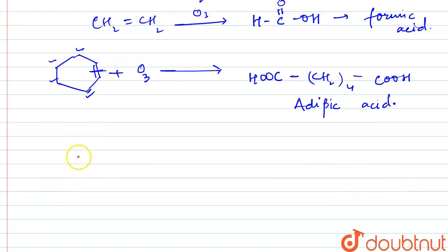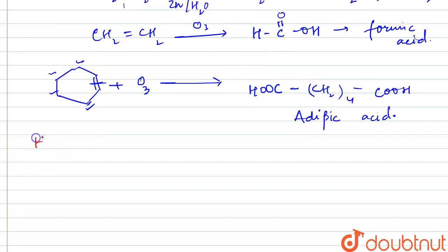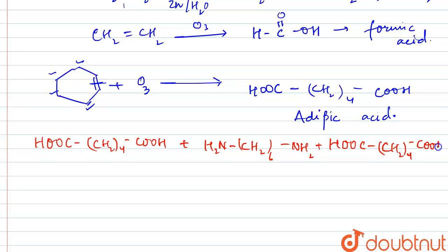Let's come to the second part of this question. That is, when adipic acid reacts with NH2-CH2-O6-NH2. That is, this is a process of polymerization. We can simply here see that HOOC-CH2 whole 4-COOH will react with H2N-H2 whole 6-NH2.